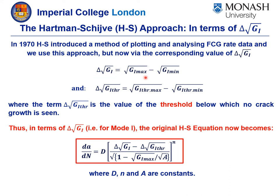We have delta root G as previously defined. We have a delta root G threshold value, which is the value below which no crack growth is seen. We now recast the original Hartmann-Schreiber equation as shown here. We have the rate of crack growth dA/dN per cycle, with three constants: D, N, and A, along with the delta root G threshold. By varying this threshold parameter somewhat, we can obtain one linear master relationship for all the different sets of data. We will use Dr. Yeo's results as an example — he has produced 76 sets of data, making it a really good test of the Hartmann-Schreiber approach.